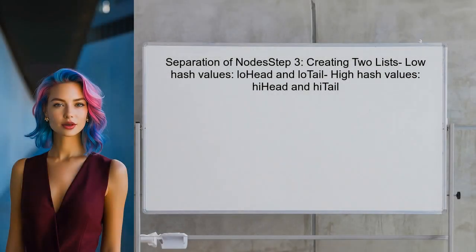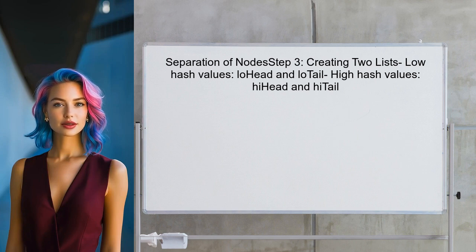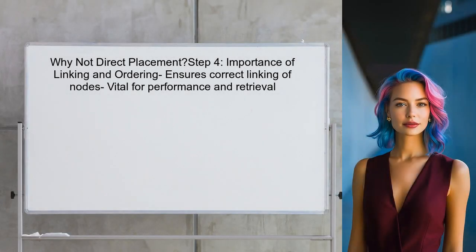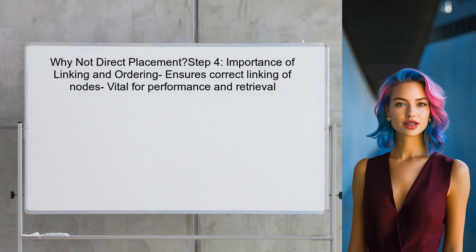In the provided code, you can see that two separate lists are created: one for low hash values and another for high hash values. This separation is essential for maintaining the correct distribution of nodes. You might wonder why the code doesn't simply place nodes directly into the new table — the reason is that this approach ensures nodes are correctly linked and ordered, which is vital for performance and retrieval.